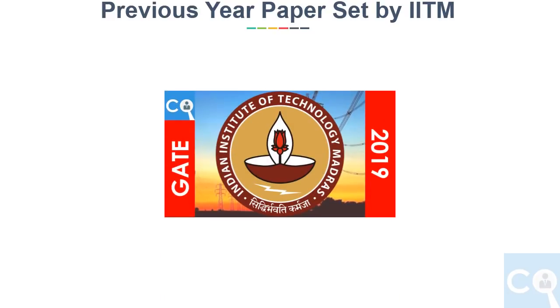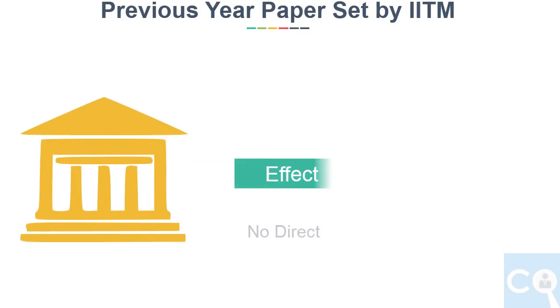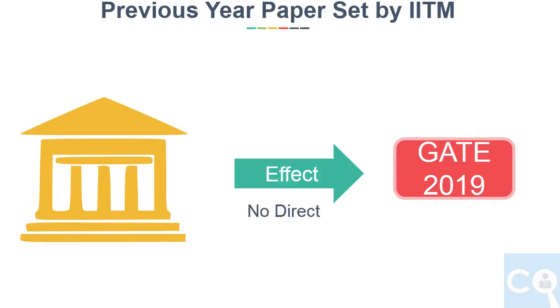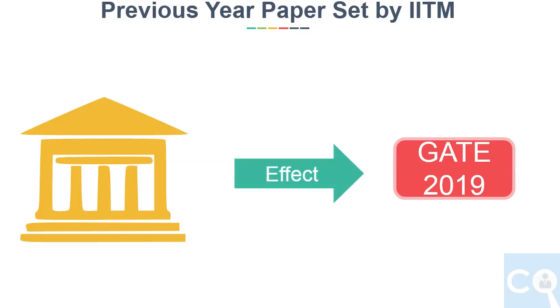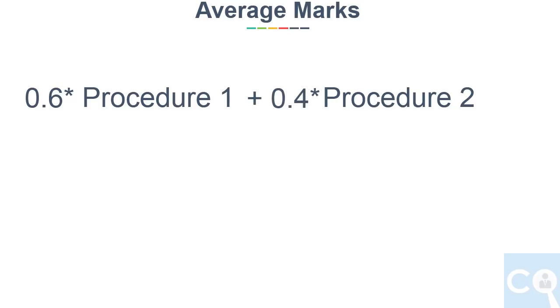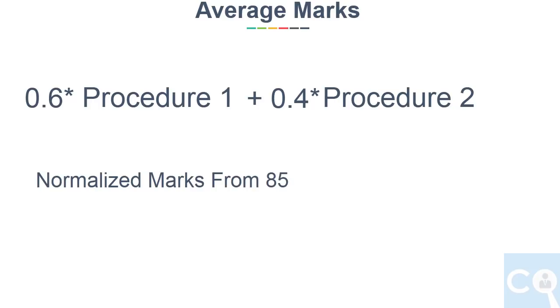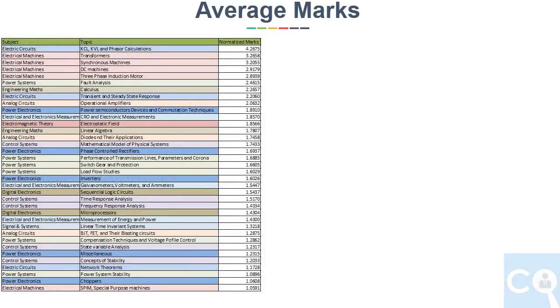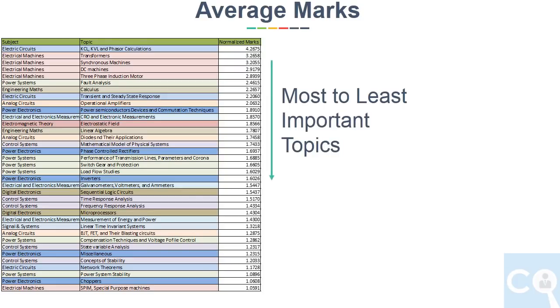Now the second point: previous year papers set by IIT Madras. We analyzed common topics regularly asked by IIT Madras, since IIT Madras is the institute conducting GATE this year. Although the institute doesn't directly decide the difficulty level, we don't want to leave any chances. We analyzed all IIT Madras papers and got average marks per topic out of 85. We then took a weighted average — 60% from the first procedure and 40% from the second — giving us a final normalized mark for each topic out of 85.